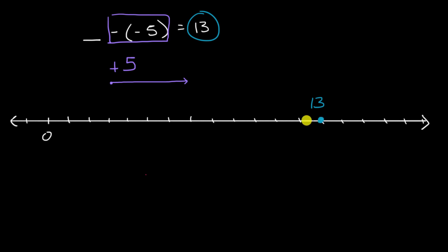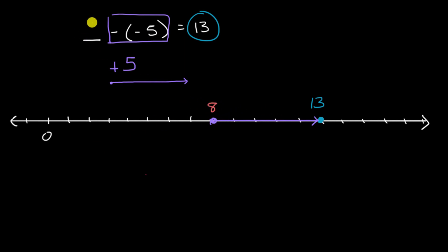That means you started five units to the left — one, two, three, four, five. You started right over here, go five units to the right, and you end up at 13. This point, five units to the left of 13, is going to be eight. And it is indeed the case that eight minus negative five is equal to 13.